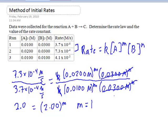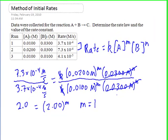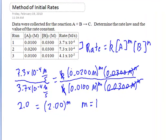That means M is equal to 1, or the reaction is first order in reactant A. Another useful shortcut: if we compare the concentrations for the first two reactions, we see that we've doubled the concentration of reactant A from reaction 1 to reaction 2. If we compare the rates, we see that we've also doubled the rate. So doubling the concentration results in doubling the rate — that means first order.